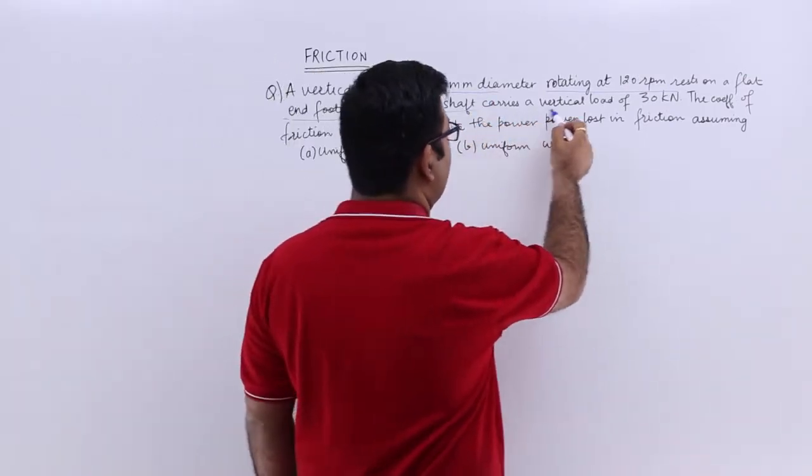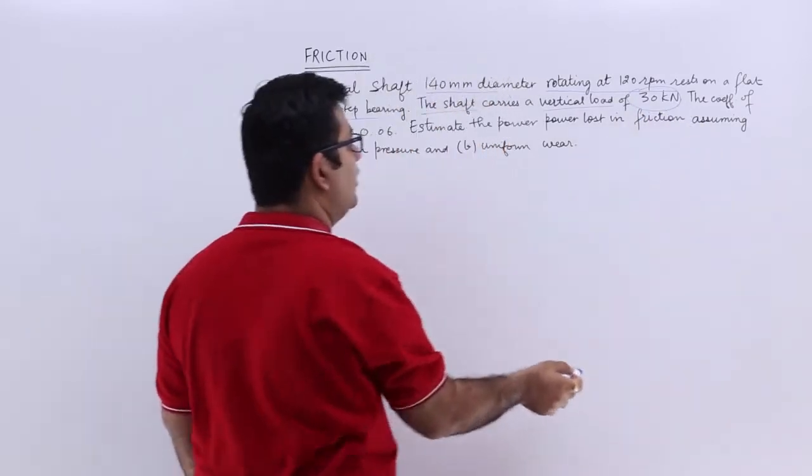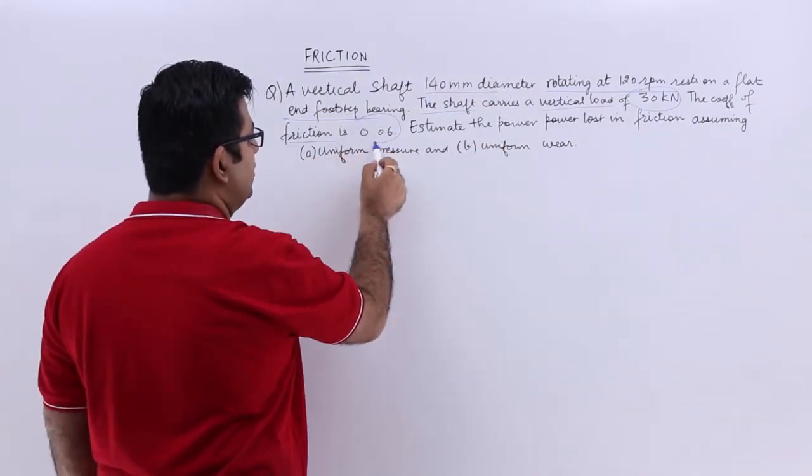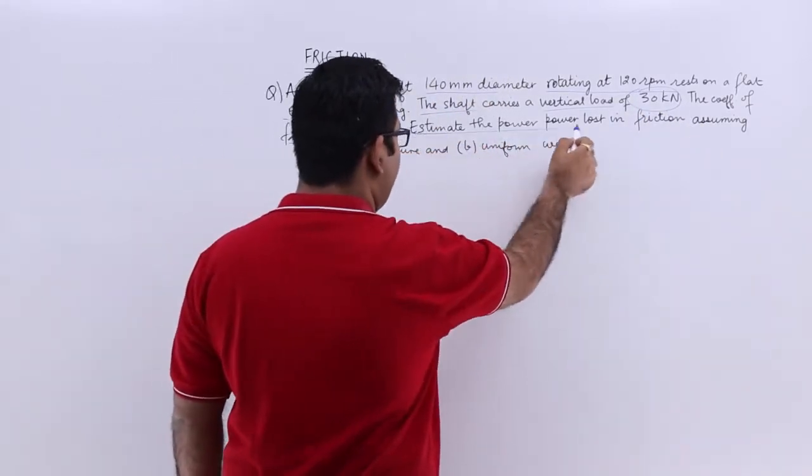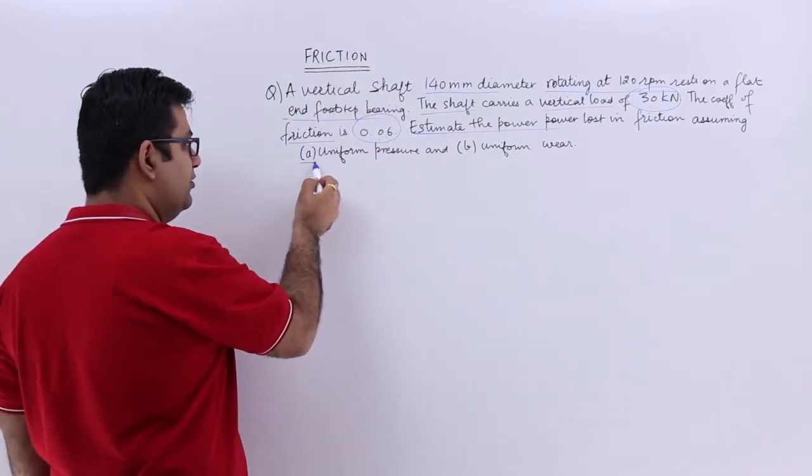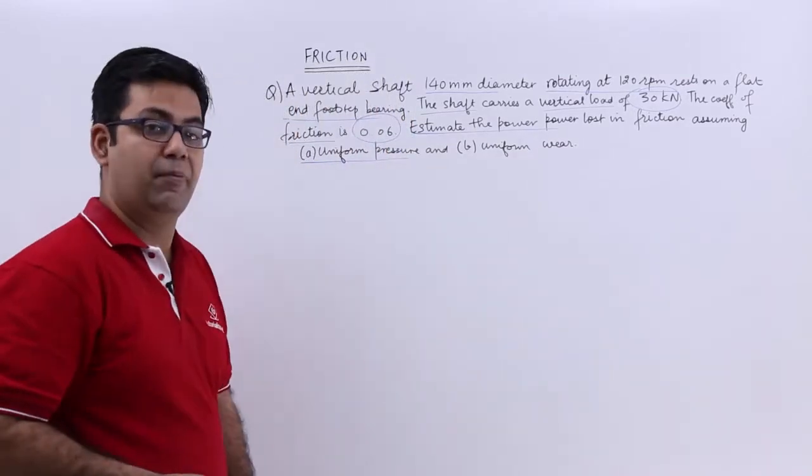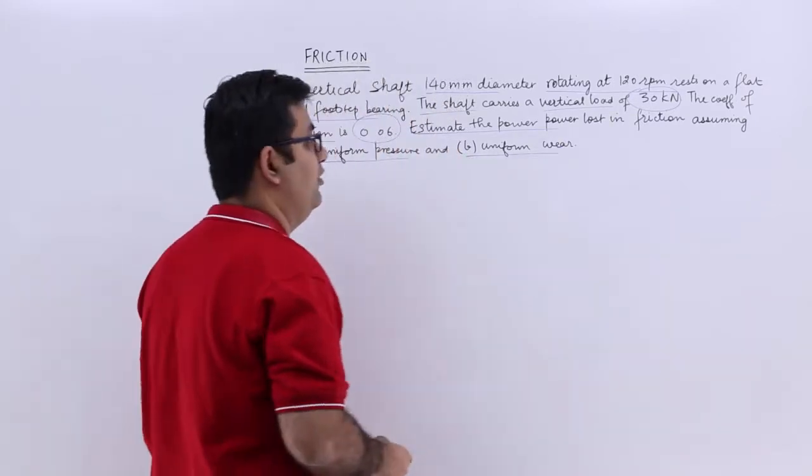The shaft carries a vertical load of 30 kilonewtons. The coefficient of friction is 0.06. Estimate the power lost in friction assuming the first case is uniform pressure and the second case is uniform wear.